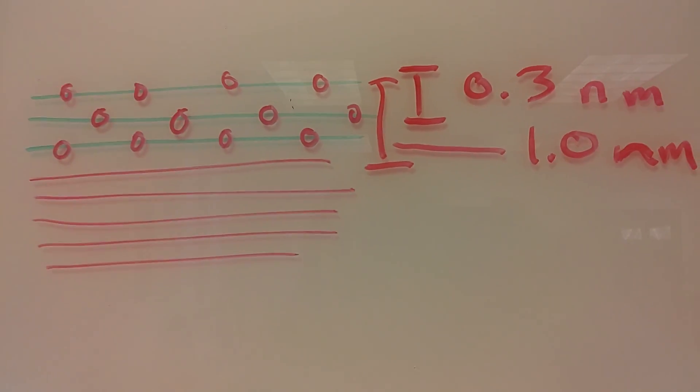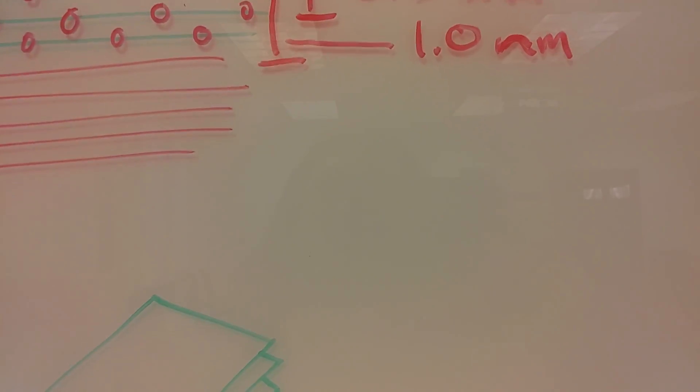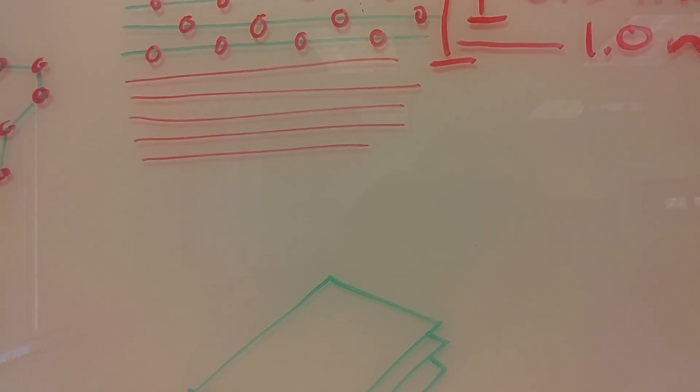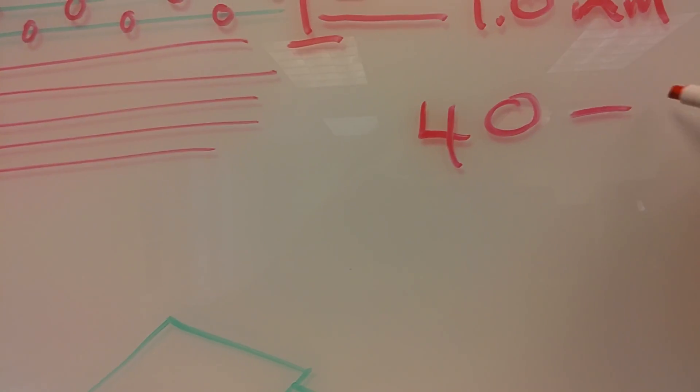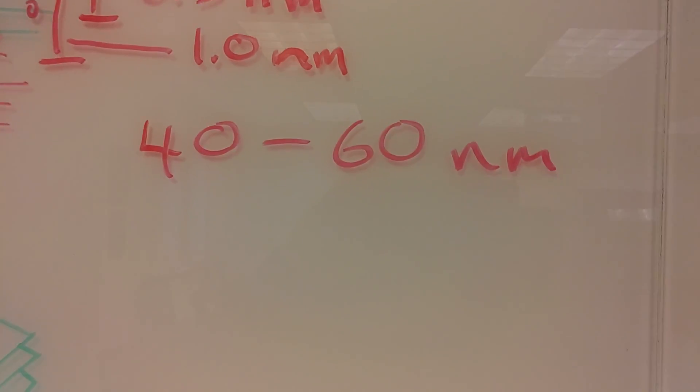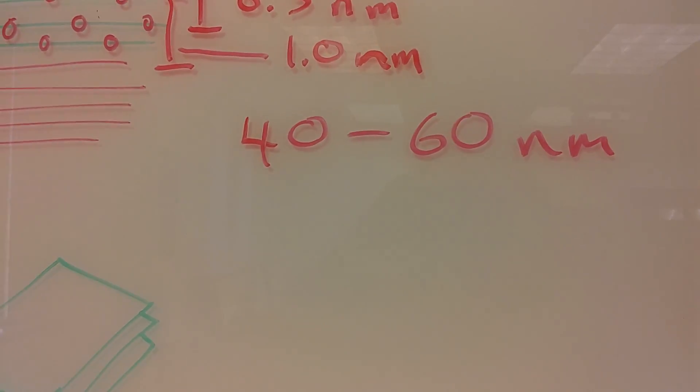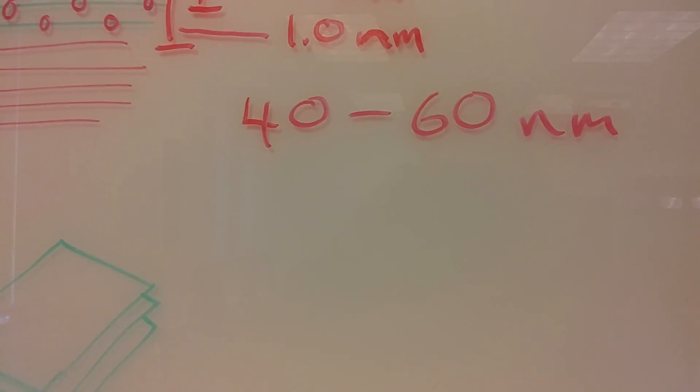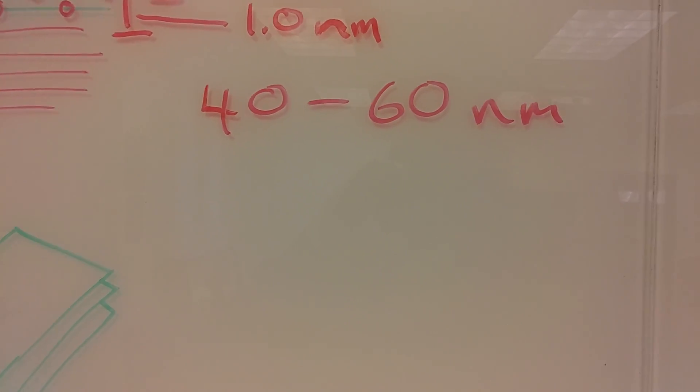After six to eight layers, you have graphite. That is all there is to it. Let's just get that out of the way. Many products, if you look, you will see that they are 40 to 60 nanometers in thickness. That is nothing more than milled graphite. That's all there is to it. Be it rGO, graphene oxide, or quote graphene nanoplatelets, that stuff is garbage. It is not graphene.